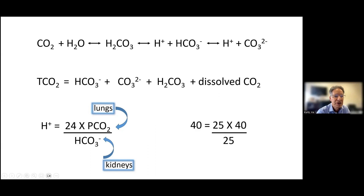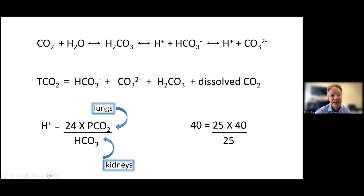As far as the concentrations of these species, bicarbonate is the most prevalent. It's in the millimolar range, whereas carbonic acid and carbonate are in the micromolar range, so we don't talk about them clinically — both because we don't need them and because their concentrations are low.